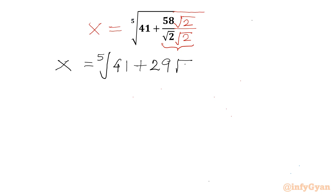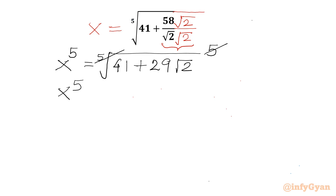Now raise both sides to power 5. The fifth root and power 5 cancel out, so I can write x to the power 5 is equal to 41 plus 29 root 2.